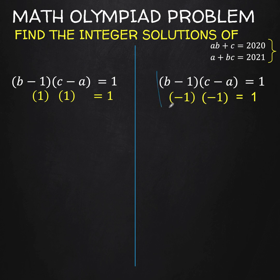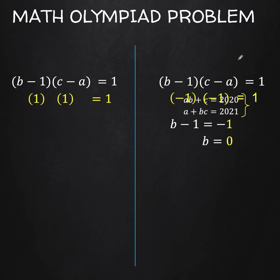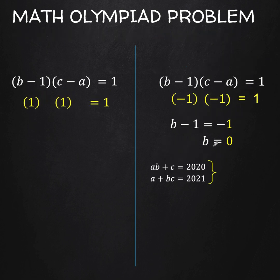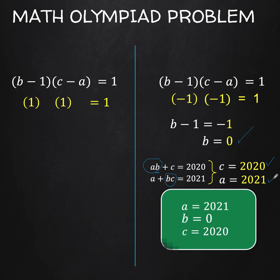In Case 1: B minus 1 equals negative 1. Adding 1 to both sides gives B equals 0. Bringing back the original equations and substituting B equals 0, the AB term becomes 0, so C equals 2020. In the second original equation with B equals 0, the BC term becomes 0, so A equals 2021. We now have one set of solutions: A equals 2021, B equals 0, and C equals 2020.